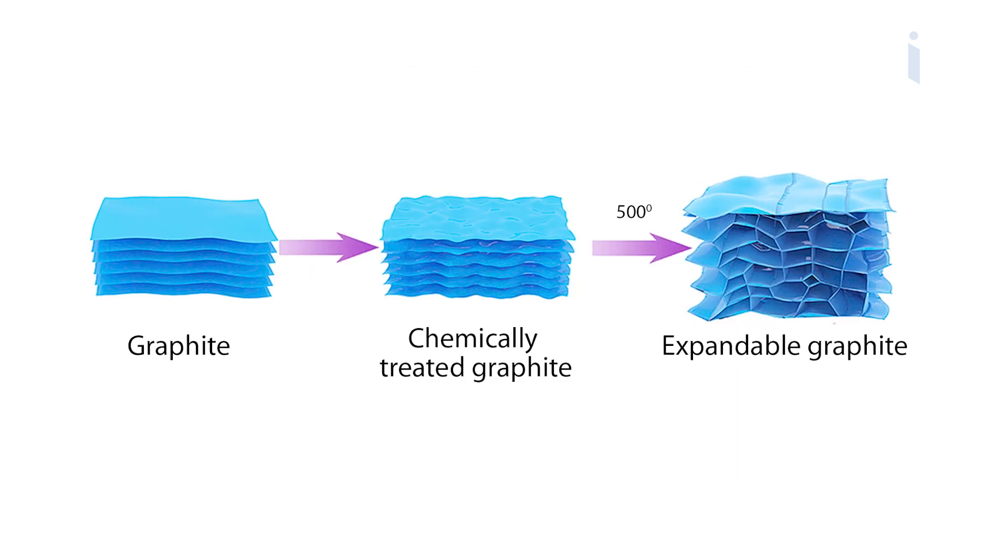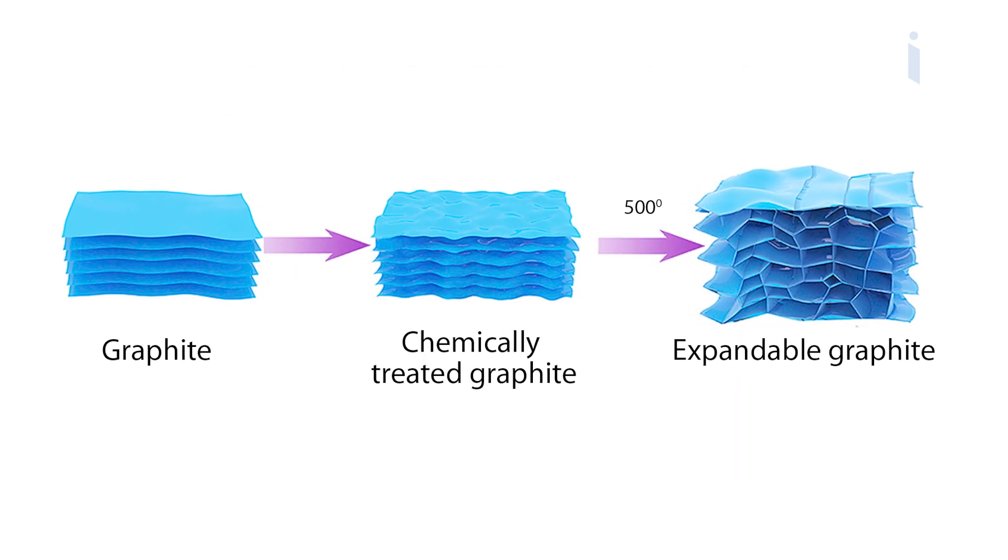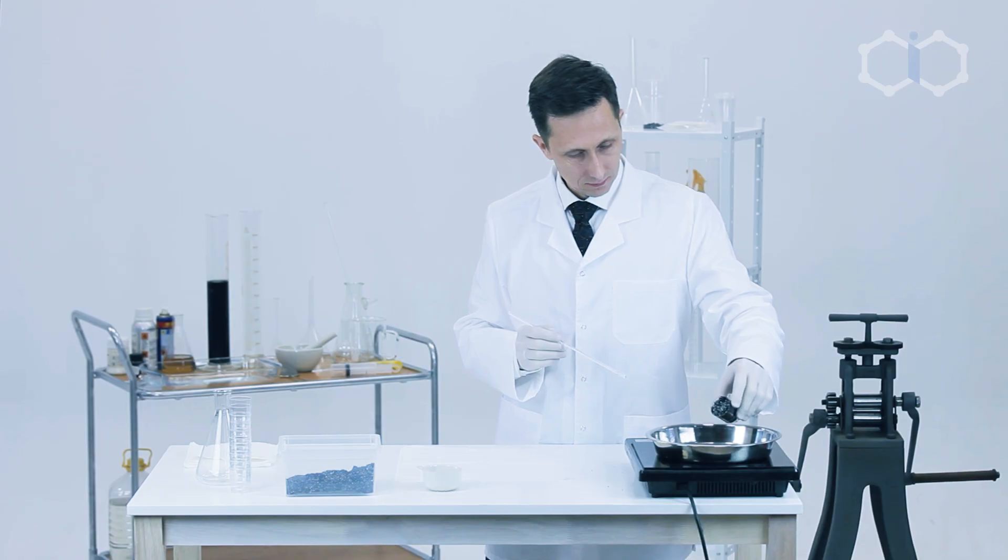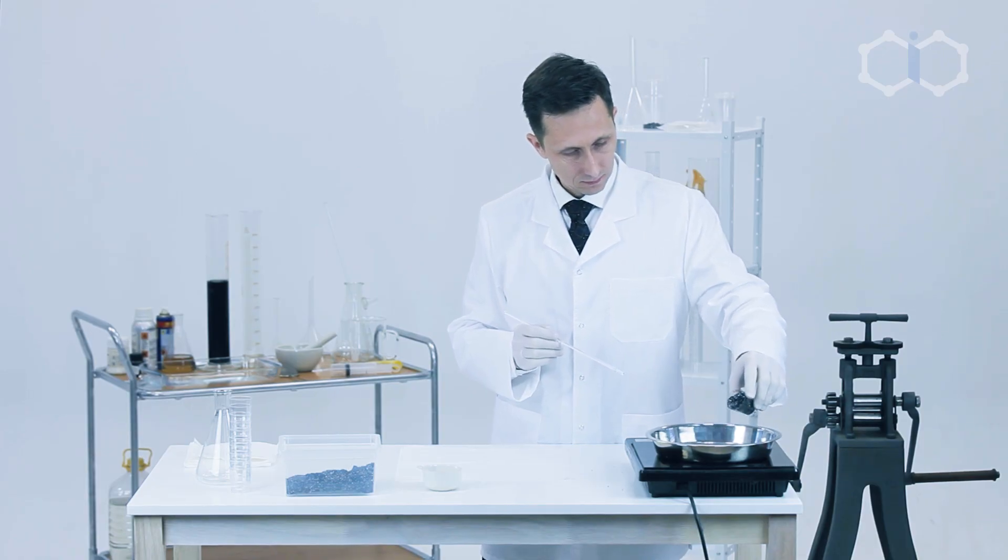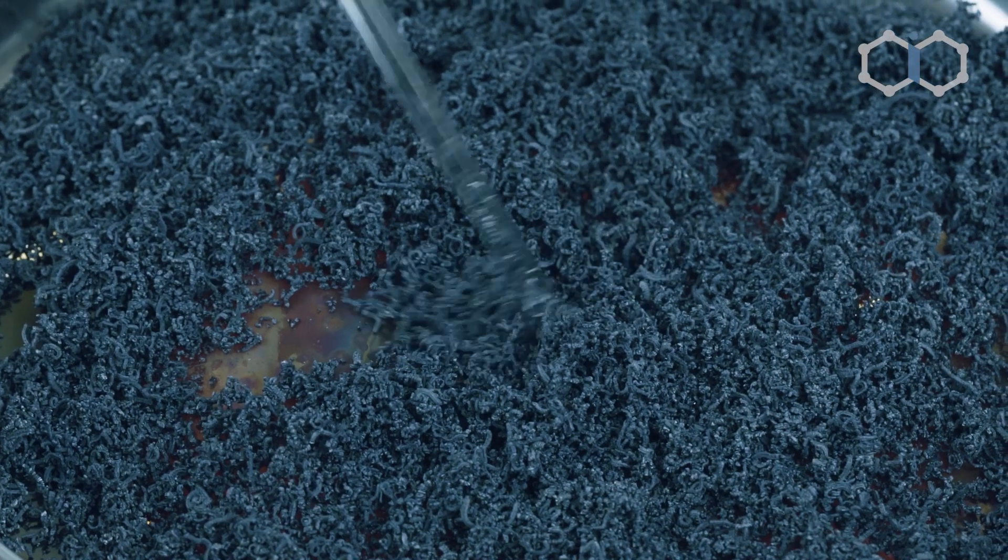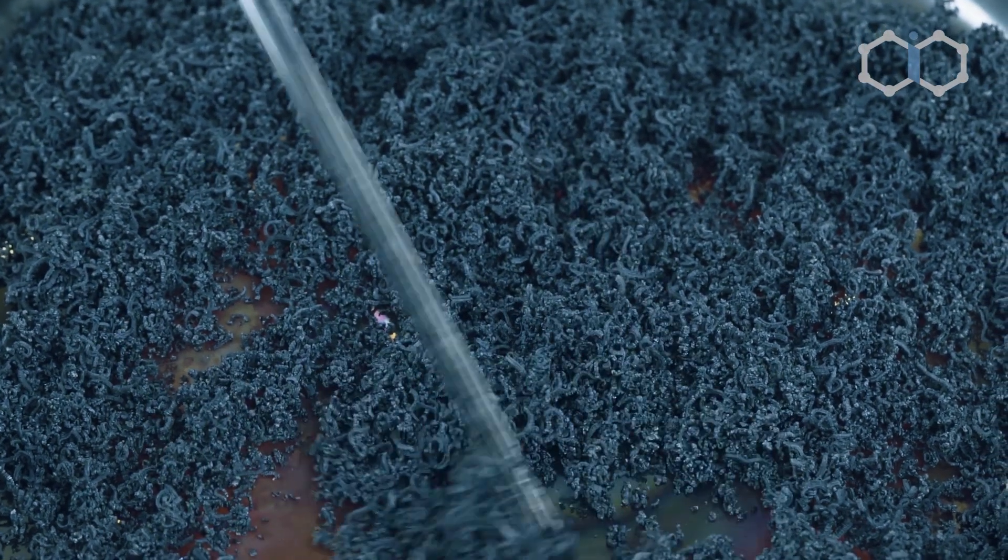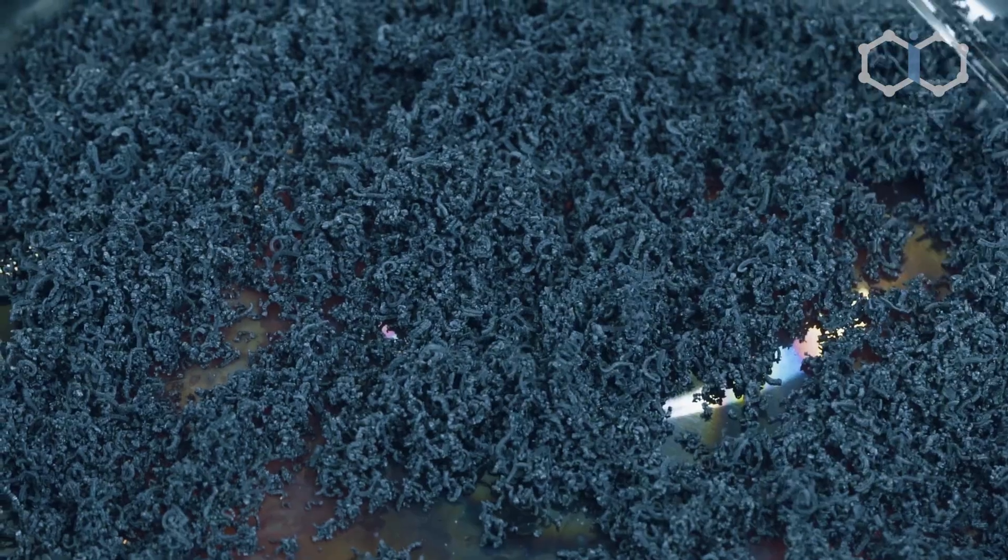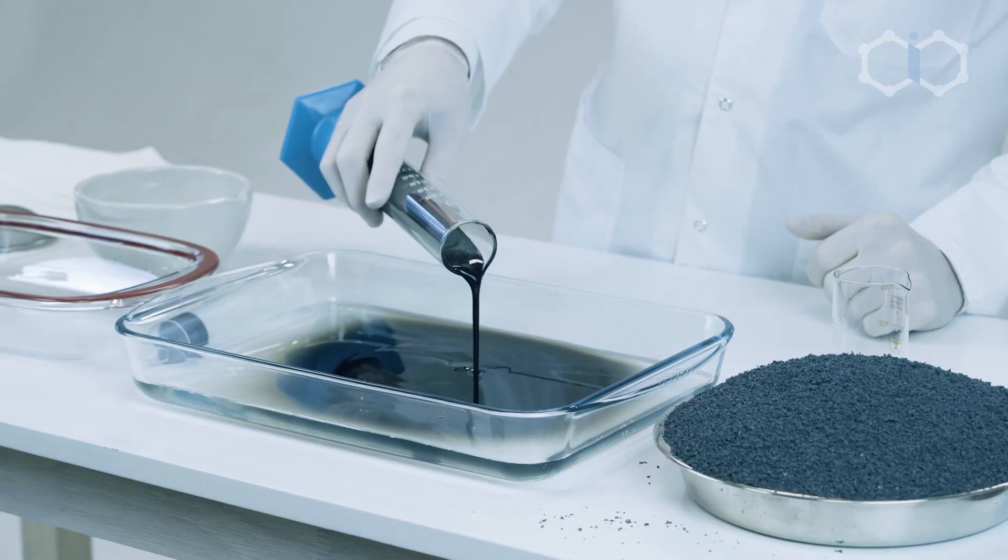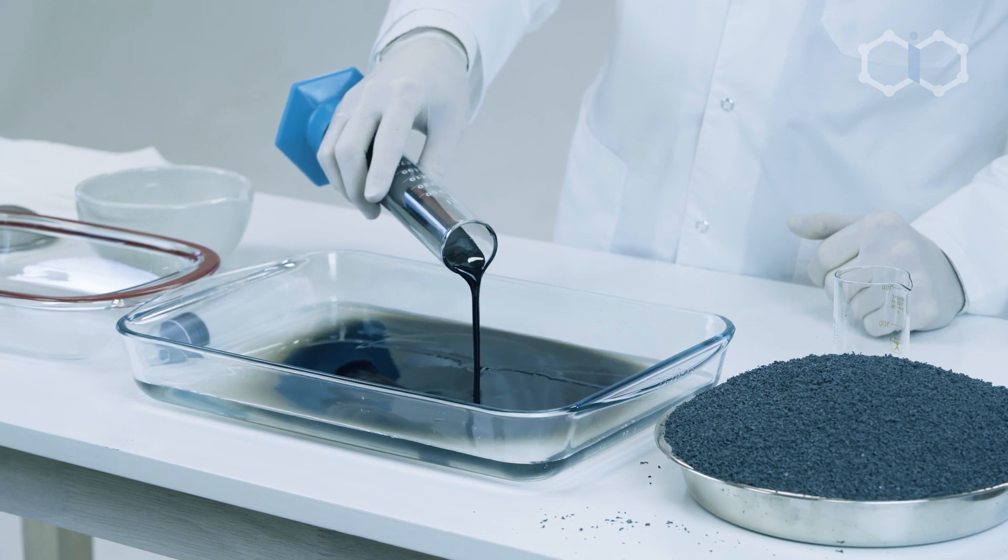Obtaining such expanded graphite is a technically simple task that can be realized indoors while still obtaining large volumes of this substance. The bulk density of the substance is approximately six kilograms per cubic meter. The cost of obtaining this product is low. This material has a number of unique properties and a wide range of practical applications.